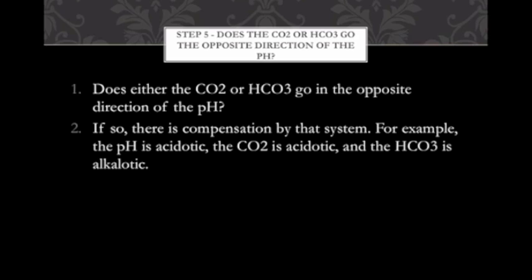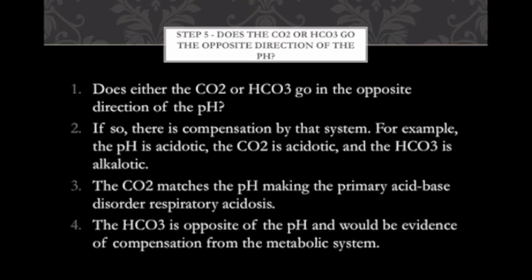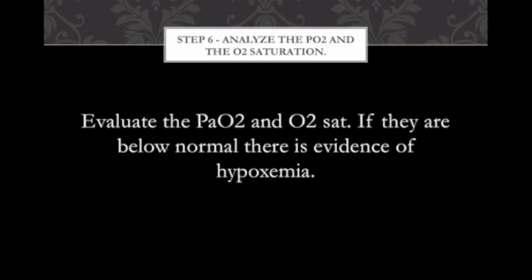Step five — does the CO2 or bicarb go in the opposite direction of the pH? If it does, there is compensation. For example: pH of 7.1, CO2 of 60 (acidic), bicarb is alkalotic — that indicates renal compensation. The pH and CO2 going in opposite directions confirms respiratory acidosis. The bicarb being alkalotic when it shouldn't be means metabolic compensation is occurring. CO2 matches the pH making it primarily respiratory; bicarb going opposite indicates compensation.